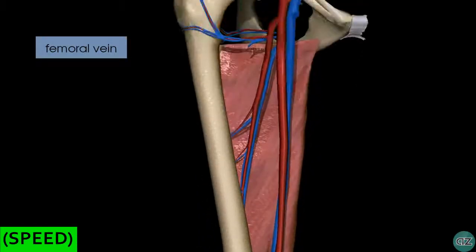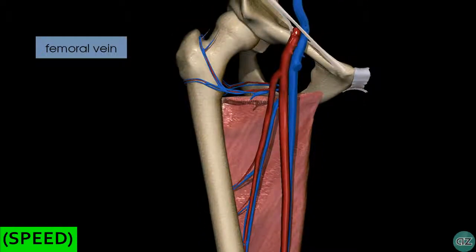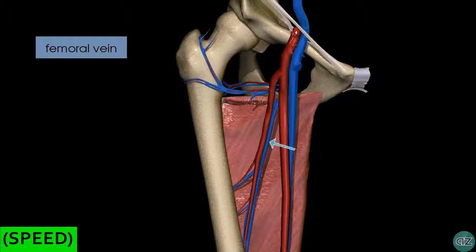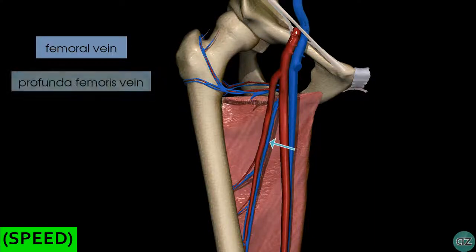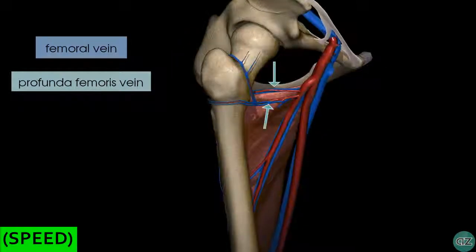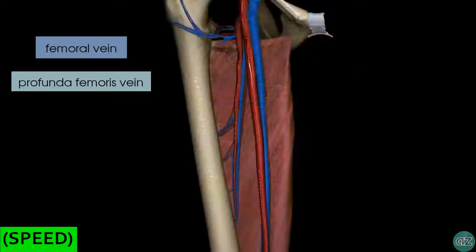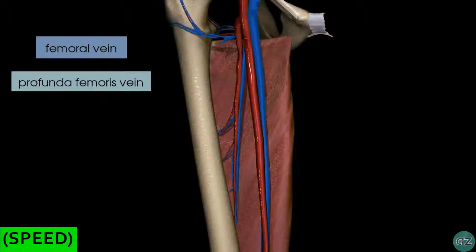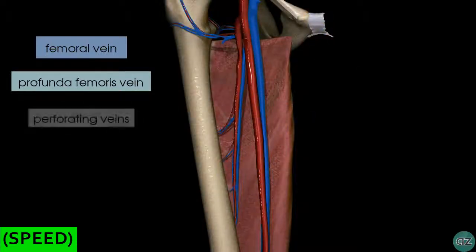Following the femoral vein proximally, we can see that it receives a tributary called the deep vein of the thigh, or the profunda femoris vein, which accompanies the profunda femoris artery. You can also see branches draining into the profunda femoris which accompany the lateral and medial femoral circumflex arteries. Just like the perforating arteries of the profunda femoris artery, there are also perforating veins which drain into the deep vein of the thigh.